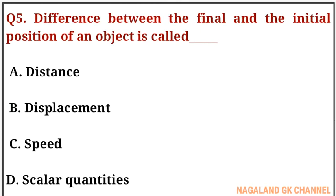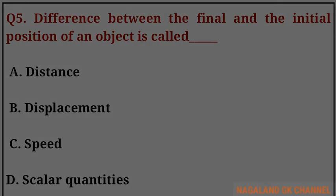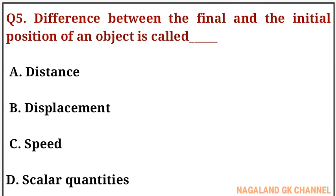Question number five: the difference between the final and the initial position of an object is called what? The correct answer is option number B, that is displacement.